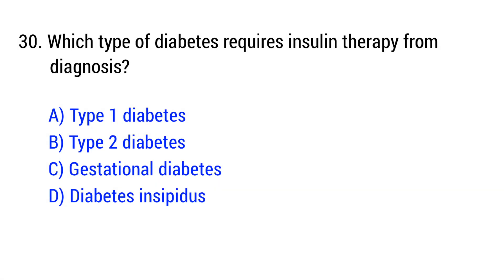Question number 30. Which type of diabetes requires insulin therapy from diagnosis? The right answer is option A: Type 1 diabetes.